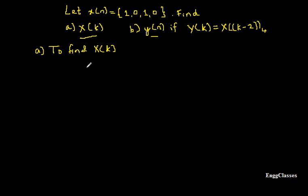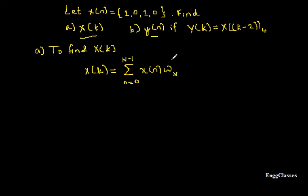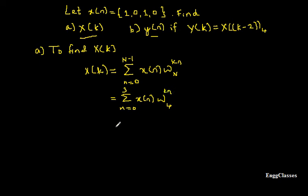To find x of k, I have the formula: x of k is equal to summation n equal to 0 to N minus 1 of x of n times W_N to the power k times n. I will change the limits — since N equals 4, it is summation n equal to 0 to 3 of x of n times W_4 to the power k into n. Next I will expand this summation by placing the values of n equal to 0 to 3.